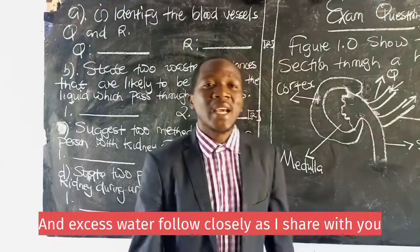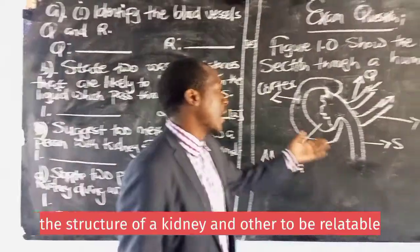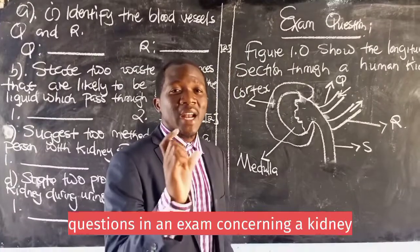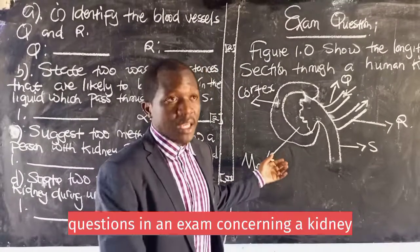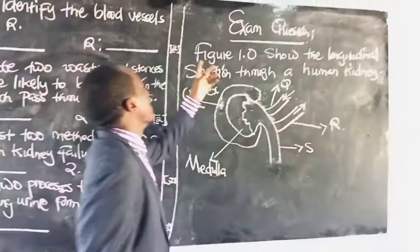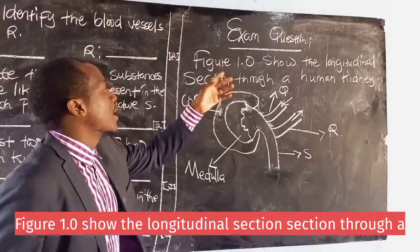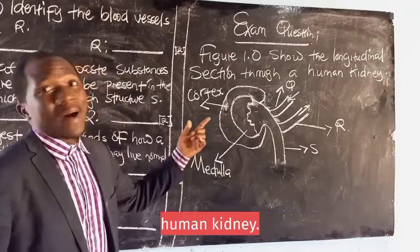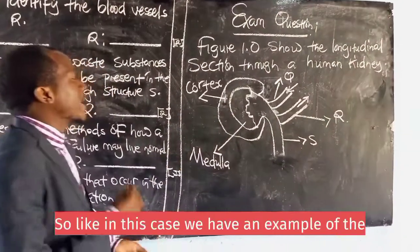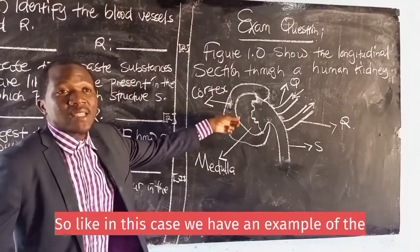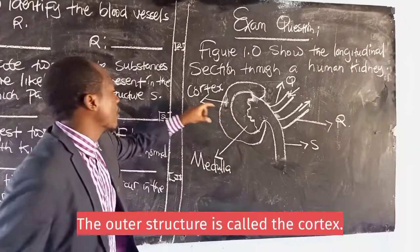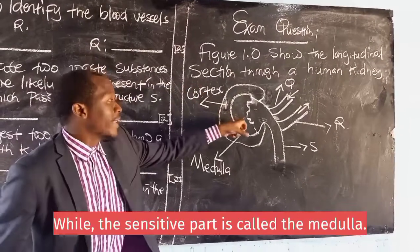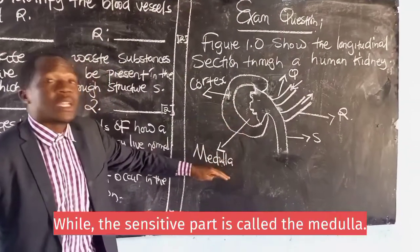Follow closely as I share with you the structure of a kidney and other related exam questions concerning a kidney. Figure 1.0 shows the longitudinal section through a human kidney. We have an example of the structure of the kidney here. The outer structure is called the cortex while the inner part is called the medulla.